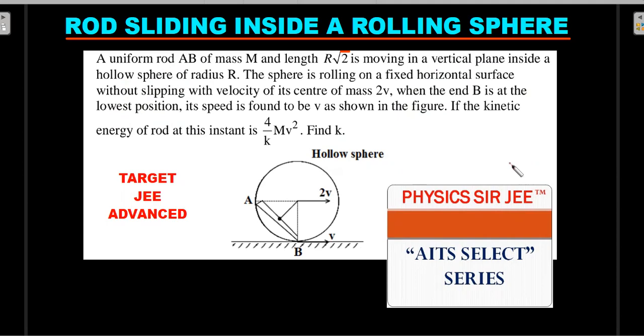Here we move ahead. A uniform rod AB of mass M and length R√2 is moving in a vertical plane inside a hollow sphere of radius R. The sphere is rolling on a fixed horizontal surface without slipping with velocity of its center of mass being 2v. When end B is at its lower position, the rod's speed is found to be v as shown in the figure towards right. If the kinetic energy of the rod at this instant is (4/k)Mv², find the value of k.